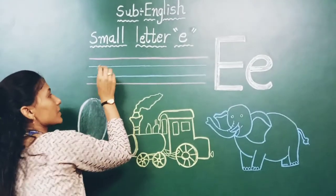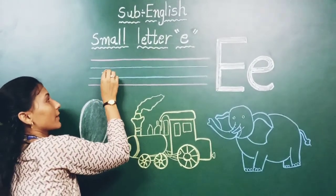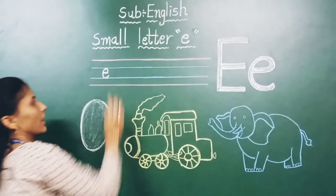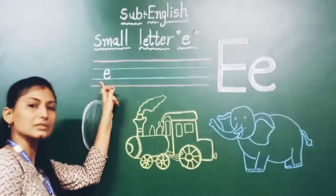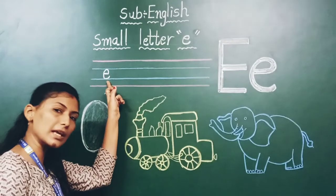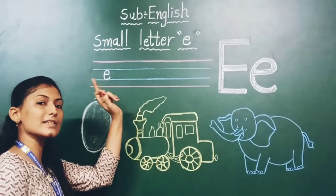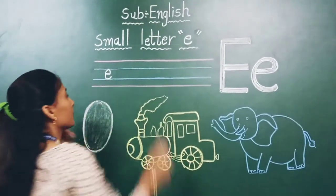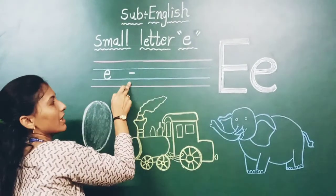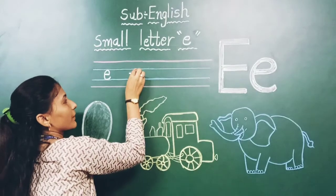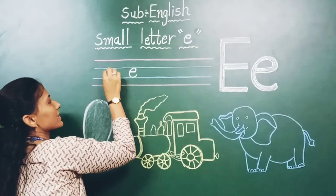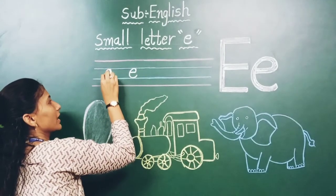So now we will learn. Blue line में sleeping line बनाओ। फिर जहाँ पे sleeping line end हो रही है, वहाँ से आपको curl करना है। Which letter is this? Small letter E. Again — sleeping line, then curl. Which letter is this? Small letter E.